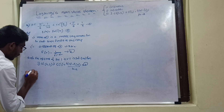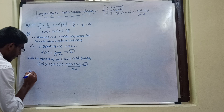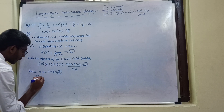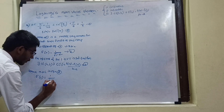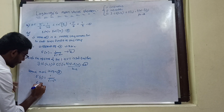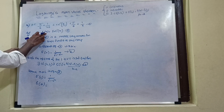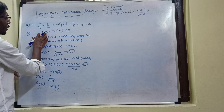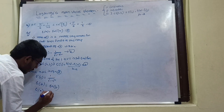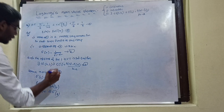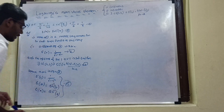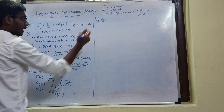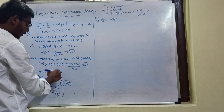Now substitute: x in terms of c in equation 3. So f'(c) = 1 / √(1 − c²). Next, f(b) = sin⁻¹(b) and f(a) = sin⁻¹(a). Put this as equation 5. Now substitute equation 5 into equation 4.